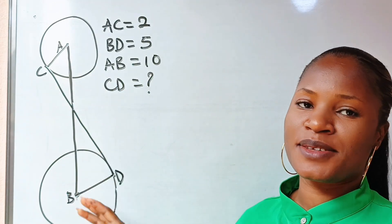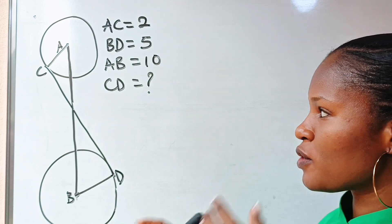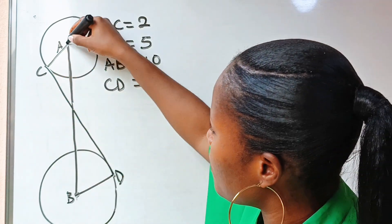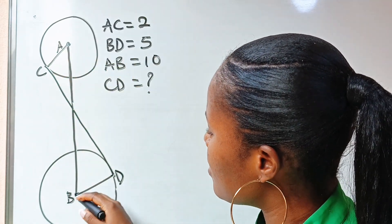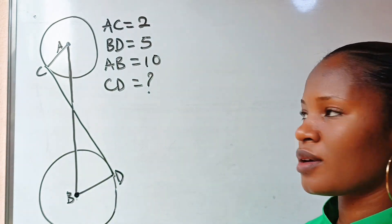So we have two circles and we are told that this is the center of the first circle, and this is the center of the second circle, all right.